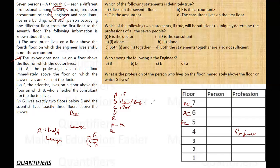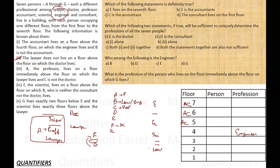G lives exactly two floors below E. Also, the scientist lives exactly three floors above the lawyer. Since the professor lives immediately above the lawyer, we get a chain: lawyer, professor, one empty floor, then scientist. So the arrangement of these four professions is: lawyer on some floor, professor one floor above, a gap, then scientist three floors above the lawyer.